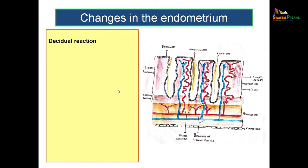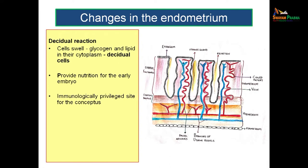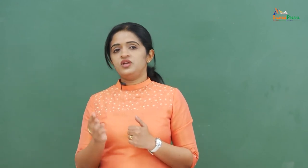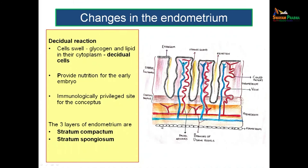After implantation, the endometrium undergoes a decidual reaction — endometrial cells get swollen due to deposition of glycogen and lipid in their cytoplasm. Such cells are known as decidual cells and provide nutrition to the early embryo. This site is considered immunologically privileged so that the fetus, though a foreign body, is not expelled. The three layers of endometrium are stratum compactum, stratum spongiosum, and stratum basale. Stratum compactum and stratum spongiosum together are known as stratum functionale.